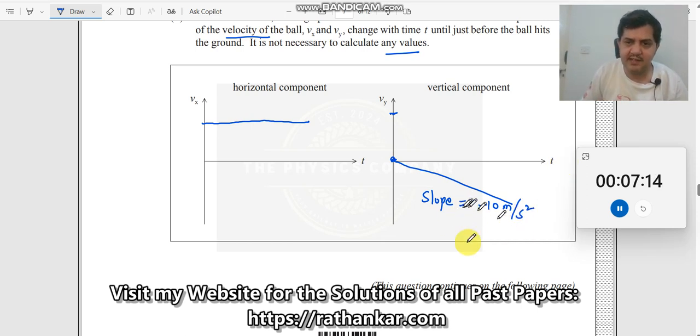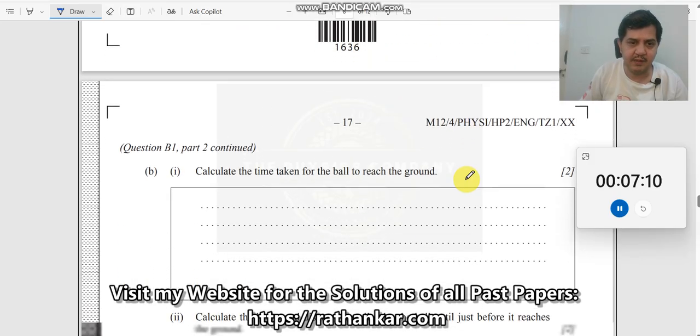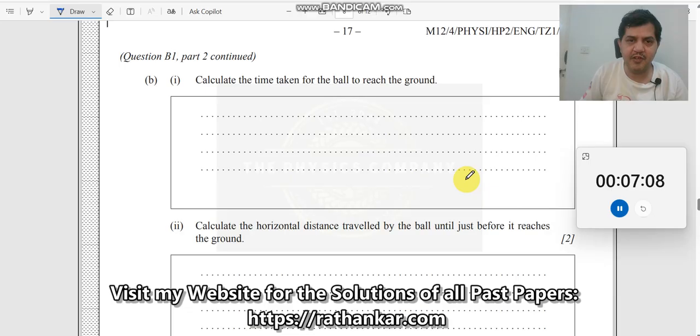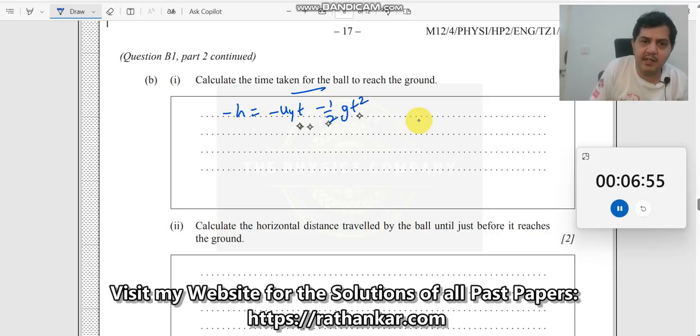If you write this, definitely you will get a mark for it, because this is nothing but your acceleration due to gravity. Let us move to the next one. Calculate the time taken for the ball to reach the ground. We know that minus h equals minus uy t minus half g t squared.